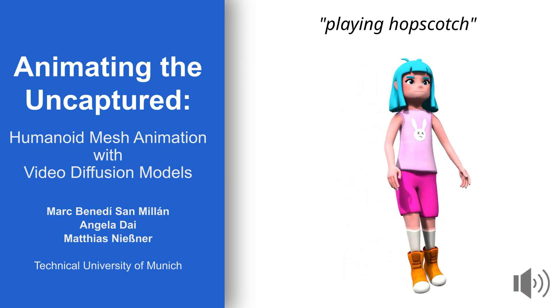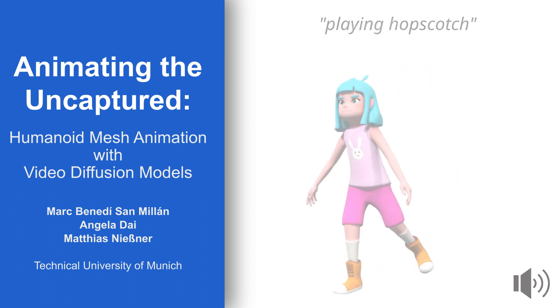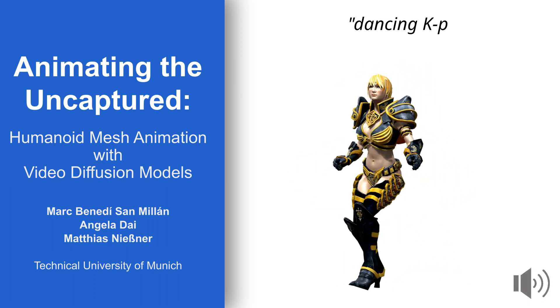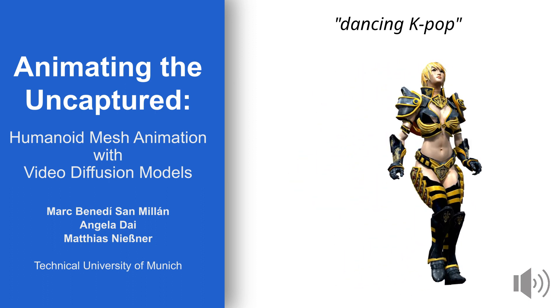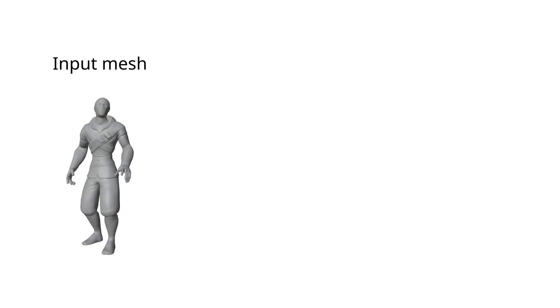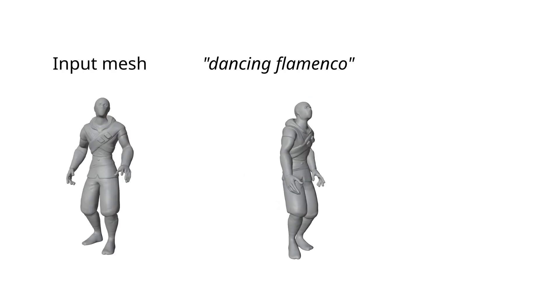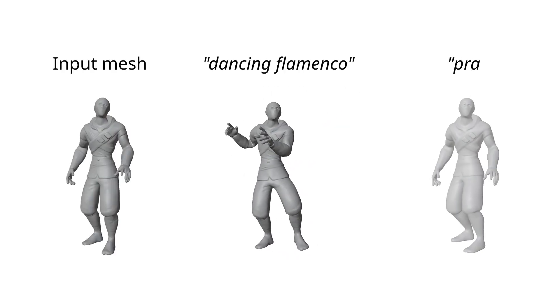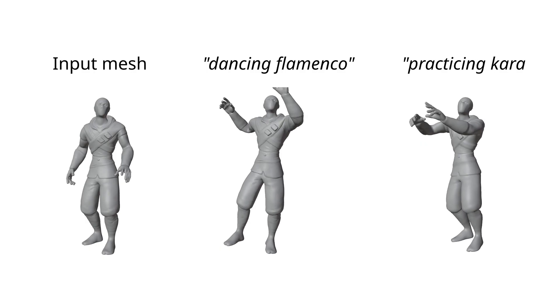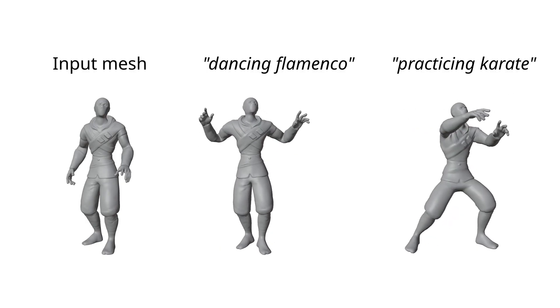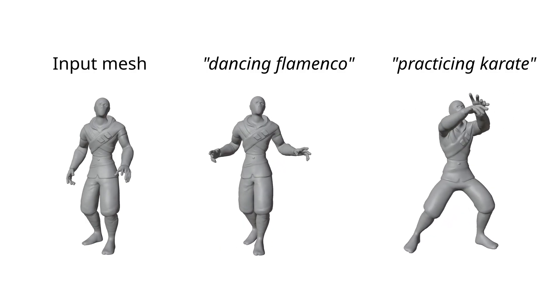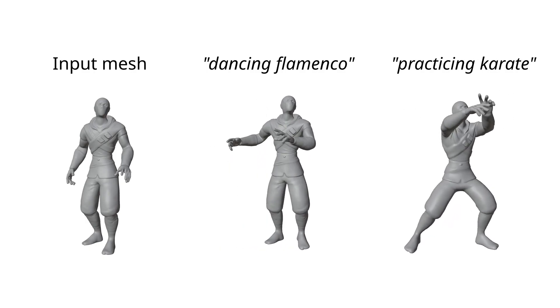We present Animating the Uncaptured, which animates human meshes from a text prompt. We address the task of text-to-motion for humanoid meshes. Given a text description of a motion and an input mesh, we animate the mesh according to the described motion.